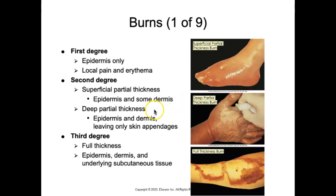With a deep partial thickness burn, the epidermis and dermis are destroyed, leaving only skin appendages. The skin tends to have a waxy or white appearance and can take weeks to heal. Treatment may involve surgically removing necrotic tissue and performing an autograft using skin taken from an unburned area of the patient.